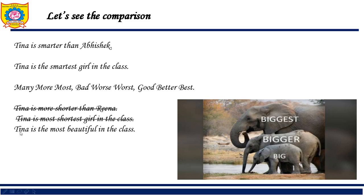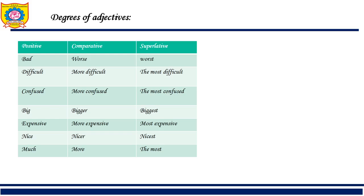However, 'Tina is the most beautiful girl in the class' is correct because I'm comparing her with all the class, so 'most beautiful' is allowed. You will come to know this through practice. Here we have three degrees: positive, comparative, and superlative.